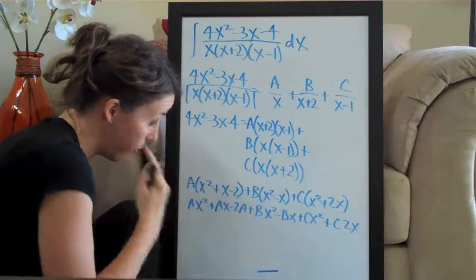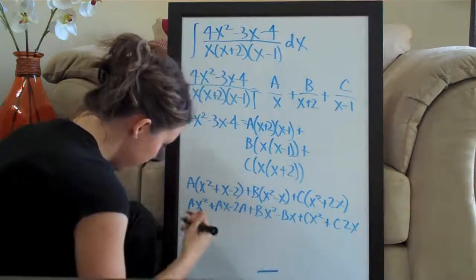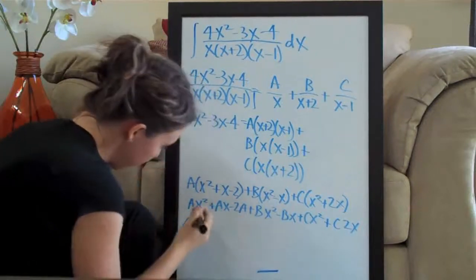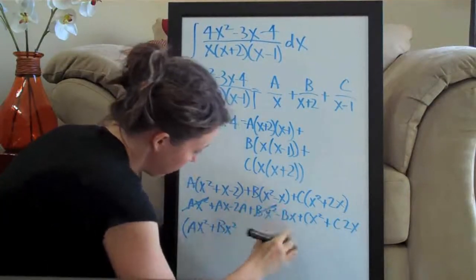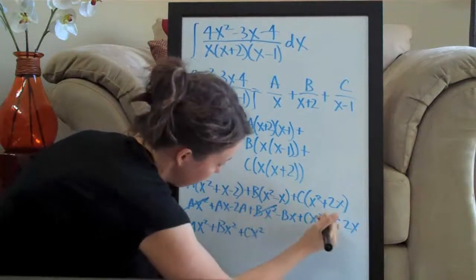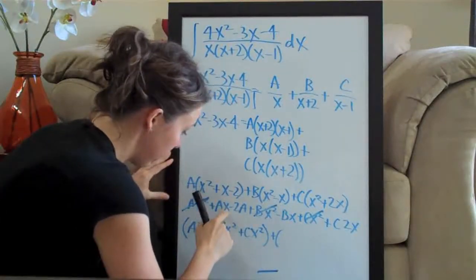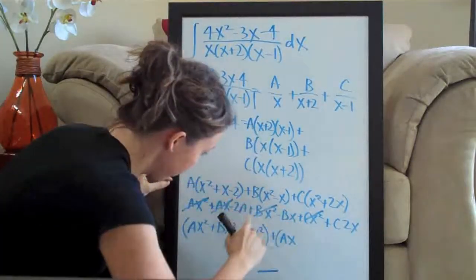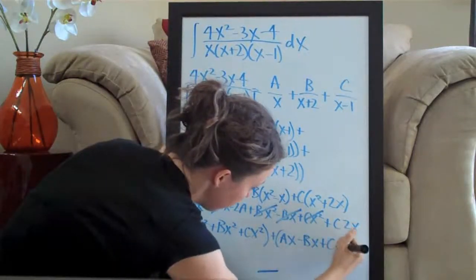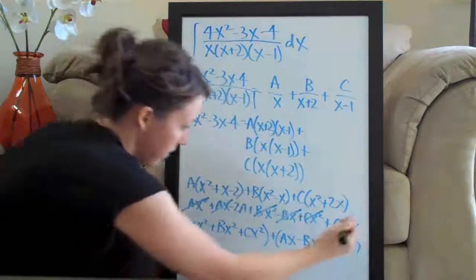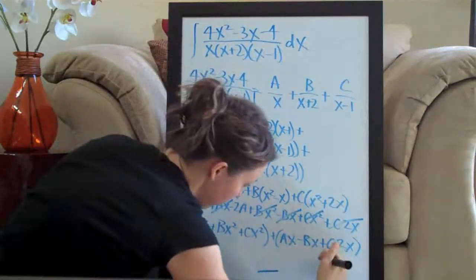Now I'm going to group like terms together — all the x squared terms, all the x terms, and then the constants. That gives us (A + B + C)x² plus (A - B + 2C)x minus 2A.